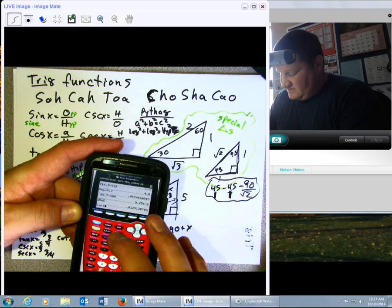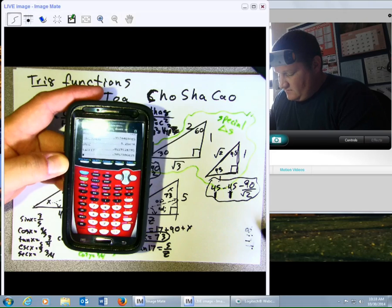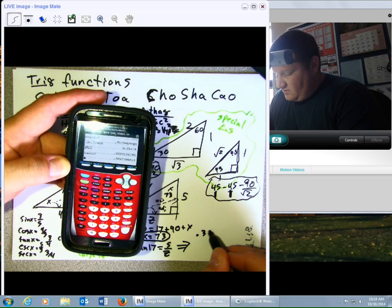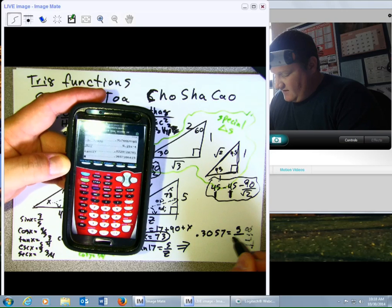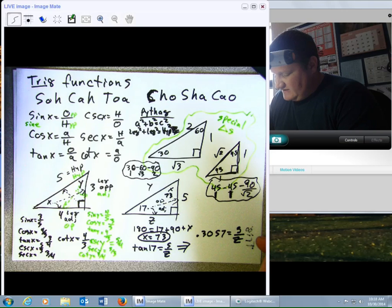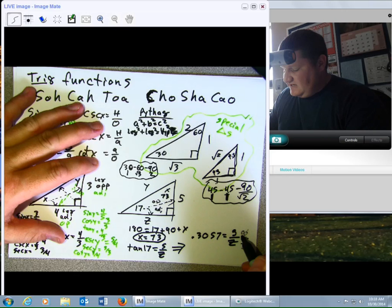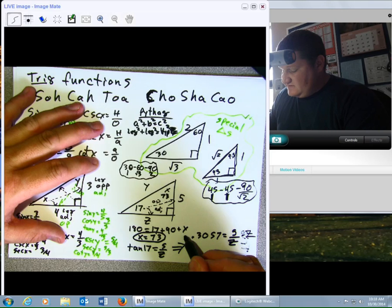And I want to say tangent of 17 degrees. Enter. It gives me a ratio of 0.3057. That equals 5 over Z. At this point, I'm able to find Z by multiply by Z. Then divide both sides by 0.3057. That's nothing but algebra.